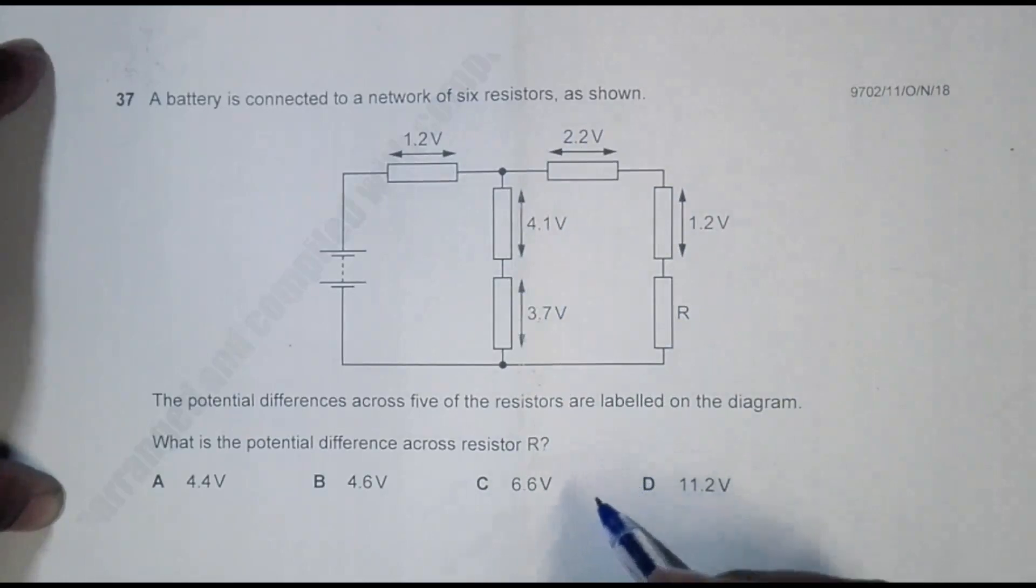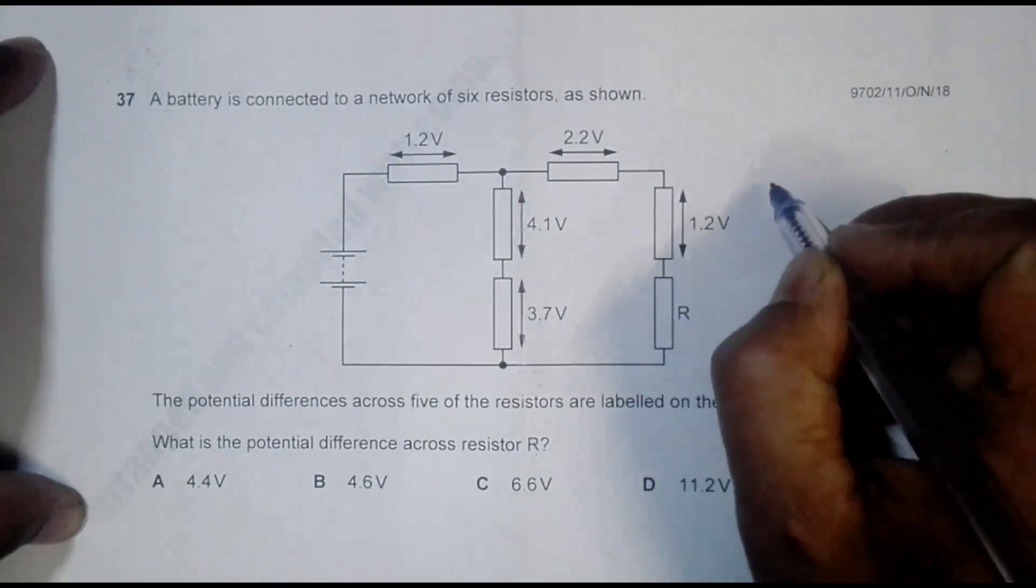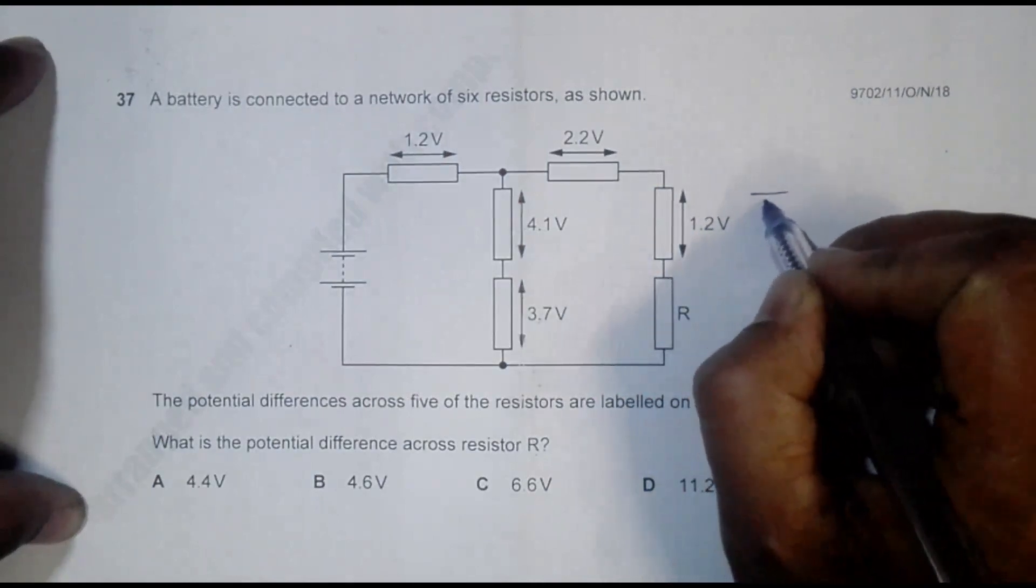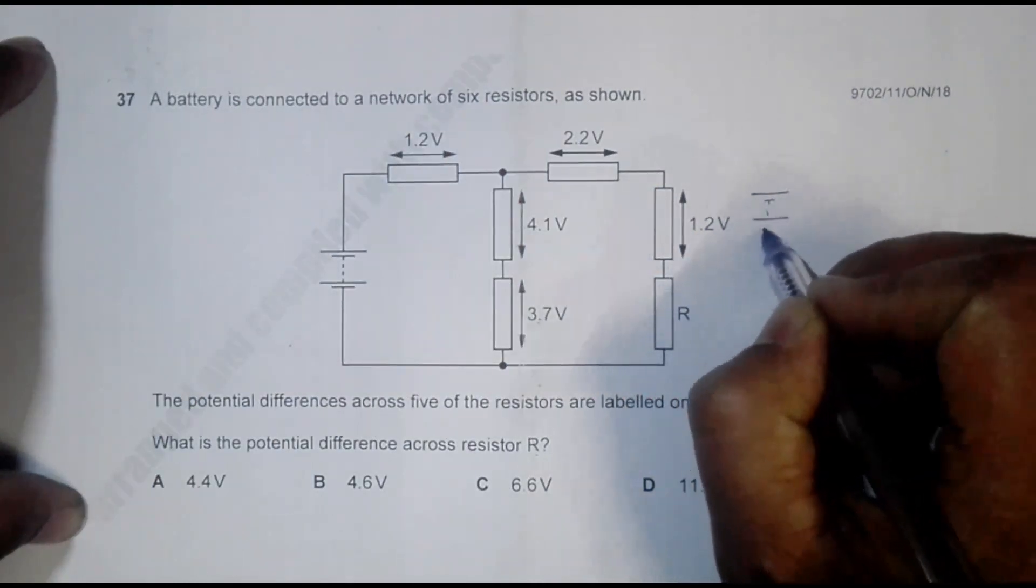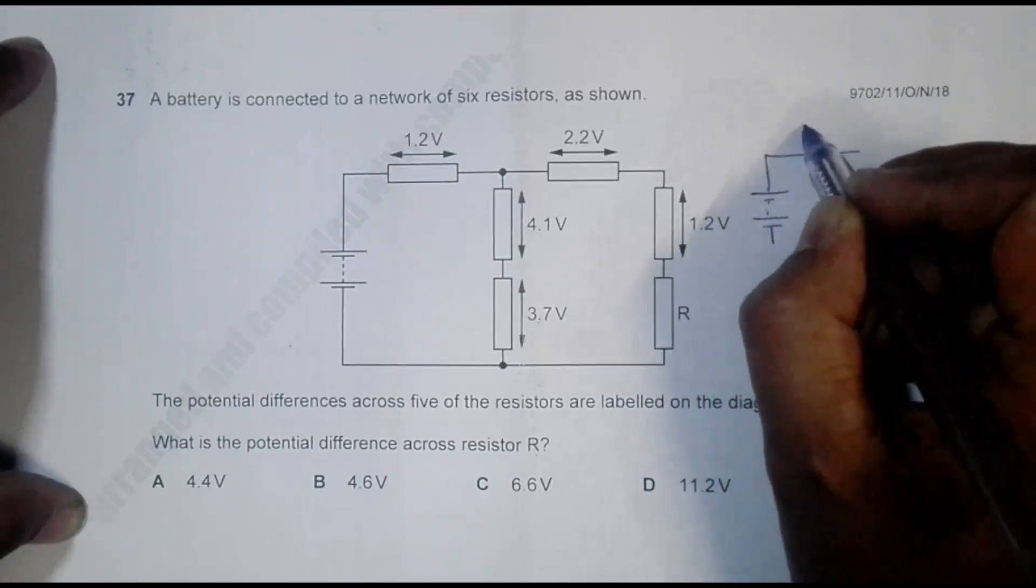So what I can do is redraw this circuit in this way. The redrawn figure would be like this: this is the source, and this is that 1.2 volt resistor where PD is 1.2 volt.